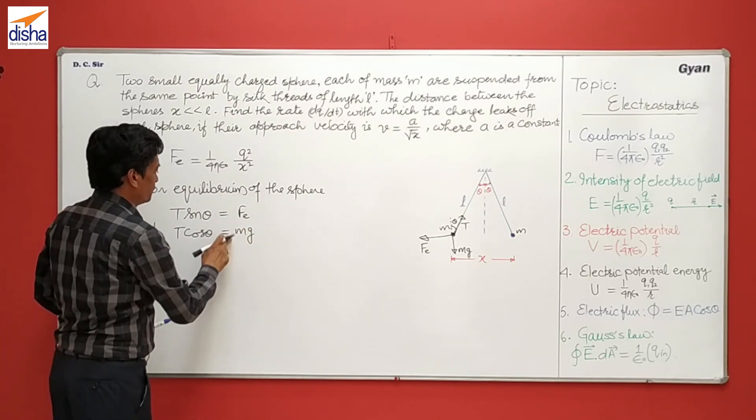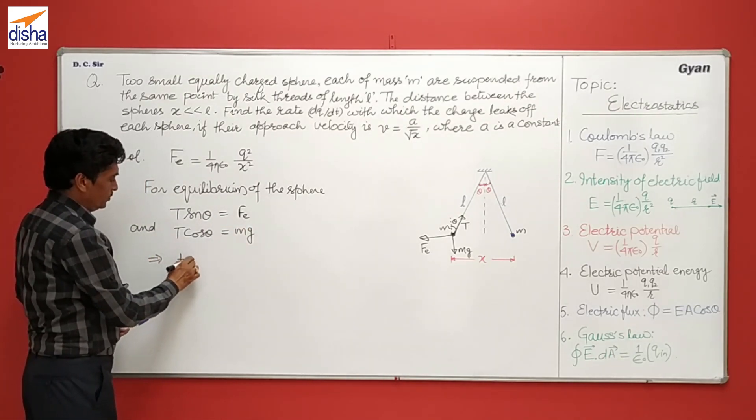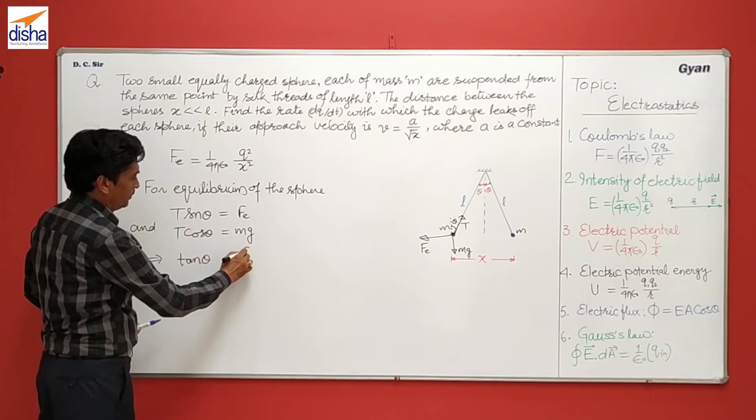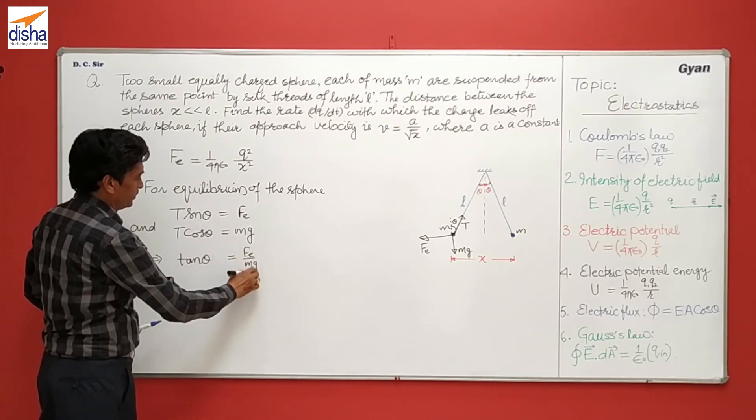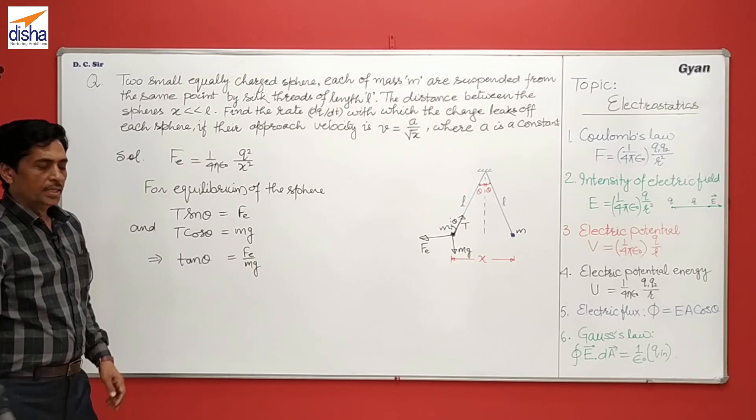So dividing first by second, we have tan theta is equal to Fe upon Mg.